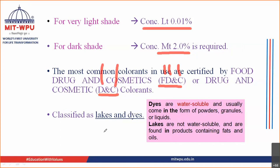As you may have studied earlier, colorants are classified as dyes and lakes. Dyes are water-soluble and come in powder, granule, or liquid form. Lakes are not water-soluble and are found in products containing fats and oils.